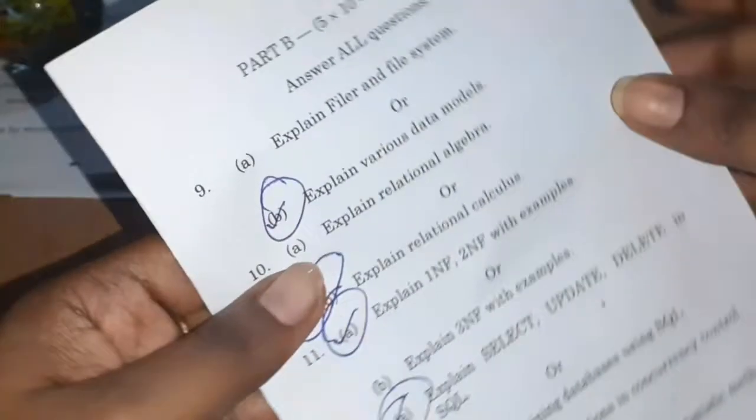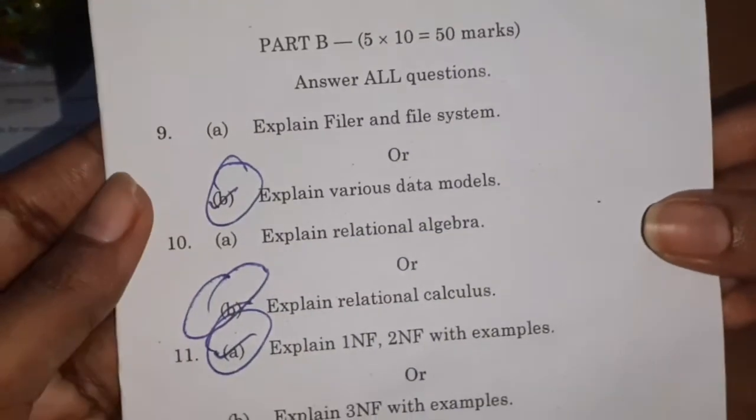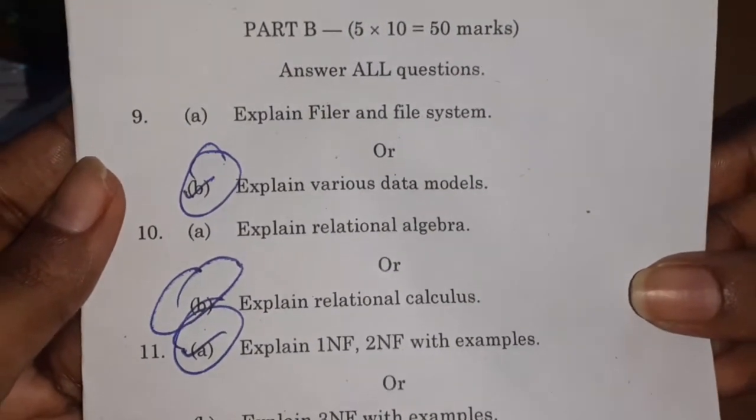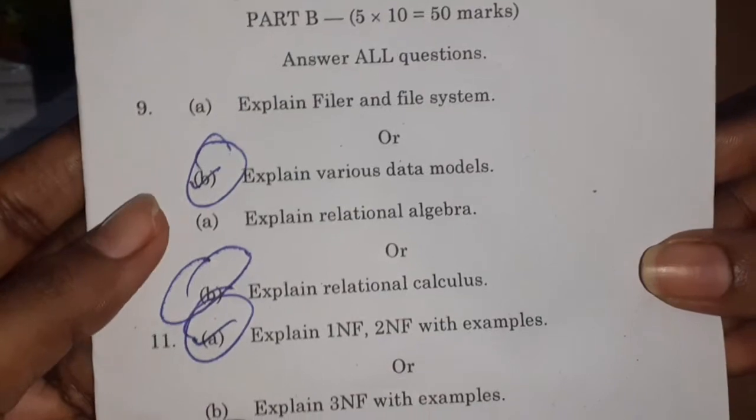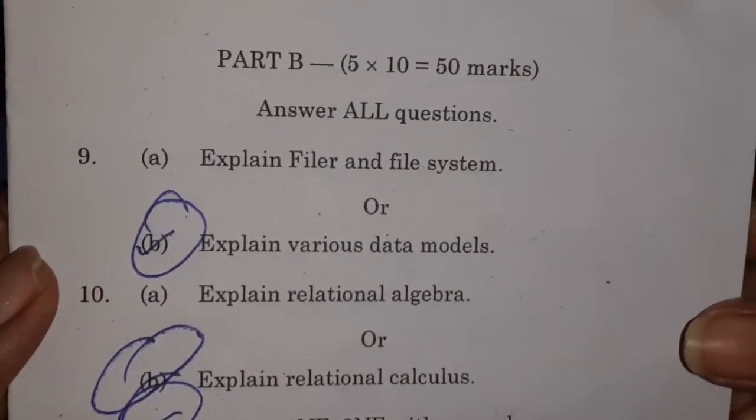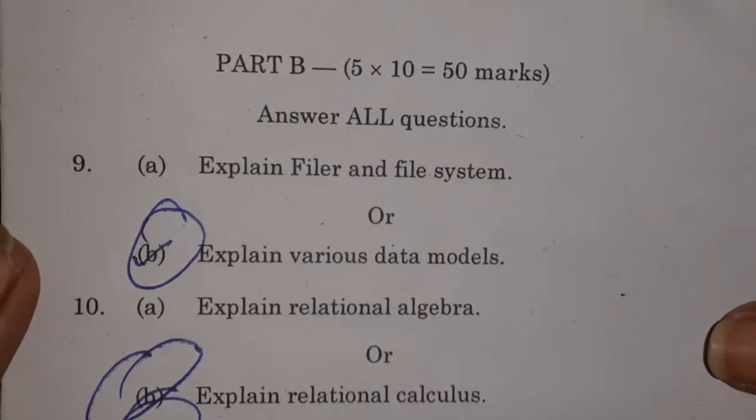Moving on to Part B where you will be given 5 questions and you need to choose 5 out of 2 choices and you need to answer from each unit. 50 marks is allotted for this section. So these are the questions.